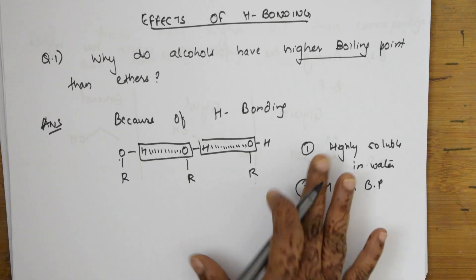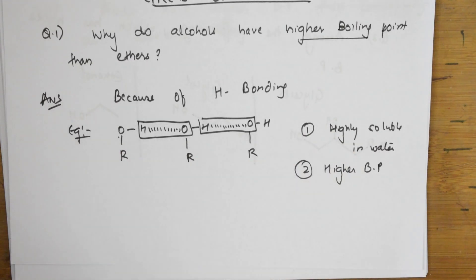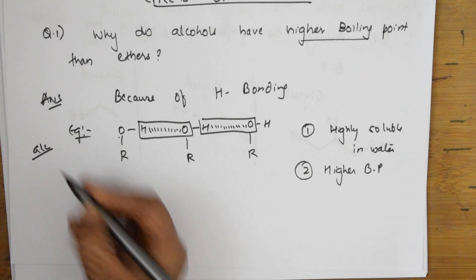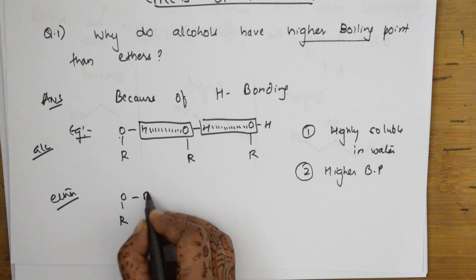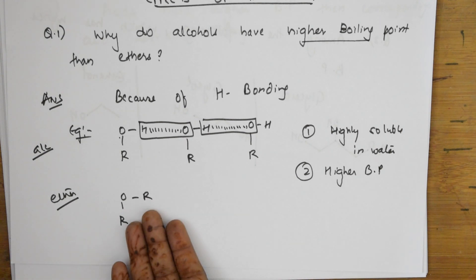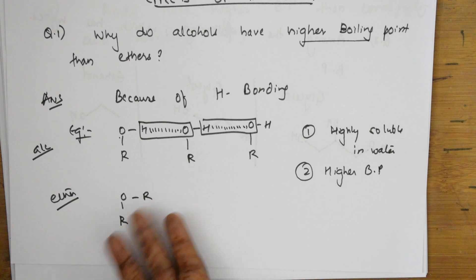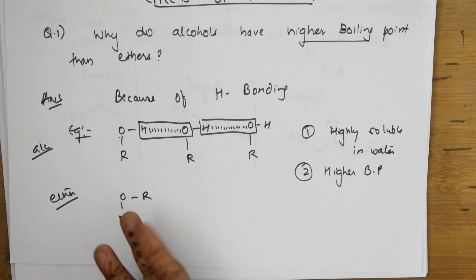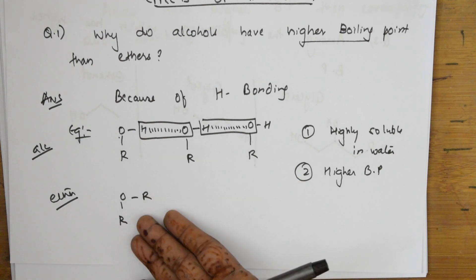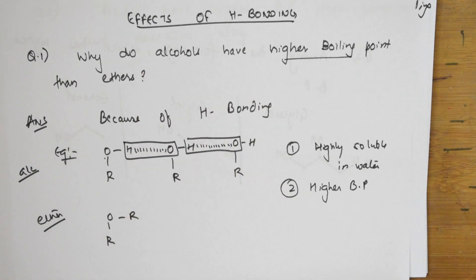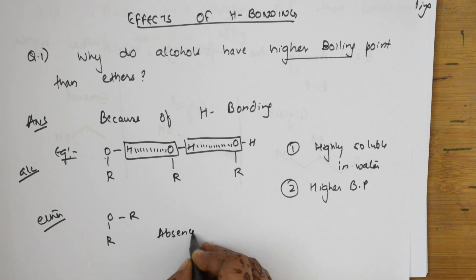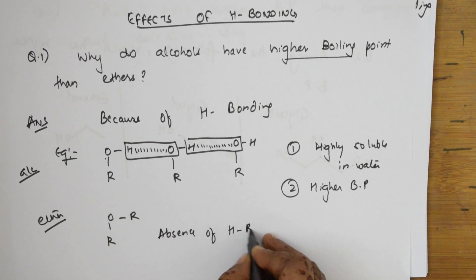In the case of ethers, the structure is R-O-R. Both groups are alkyl groups, so there is no hydrogen bonding. Because of the presence of two alkyl groups, ethers are insoluble in water and have a lower boiling point. This absence of hydrogen bonding explains why alcohols have a higher boiling point than ethers.